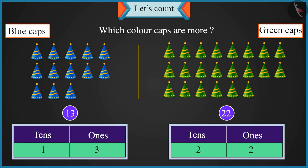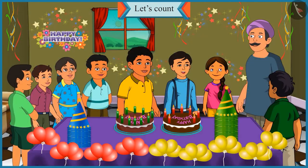Absolutely right, Chotu. That is why we do not look at ones, but tens while comparing two numbers. Number twenty-two is bigger because there are two tens in it, and there is only one ten in thirteen. I understood, Uncle. Well done, Chotu.